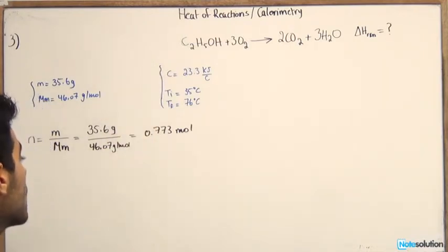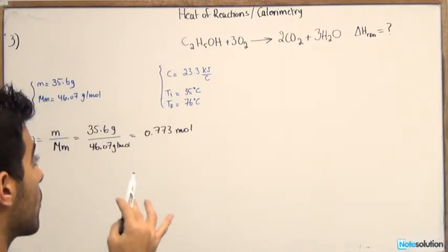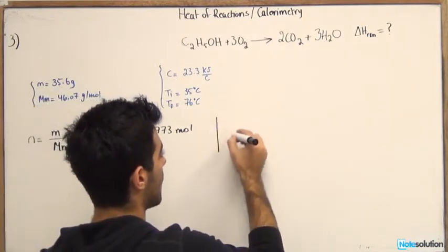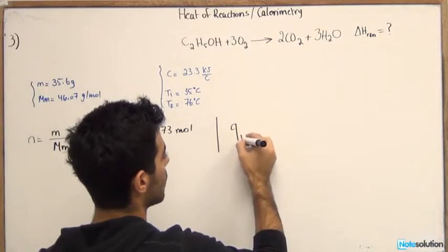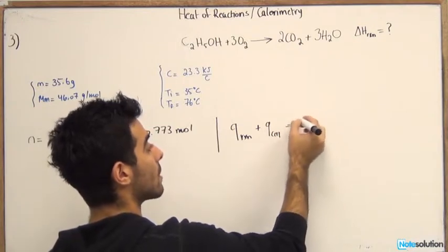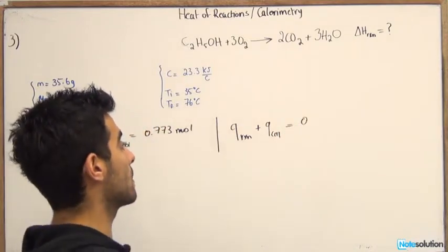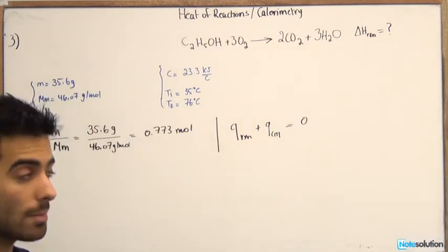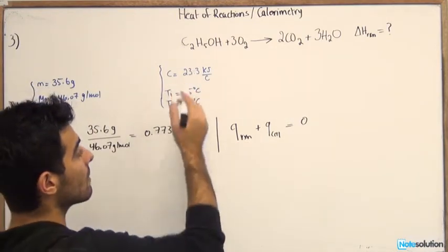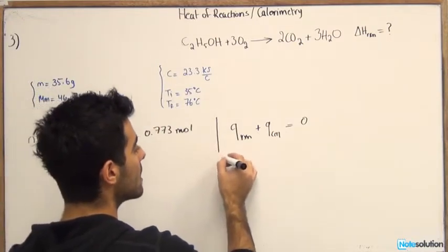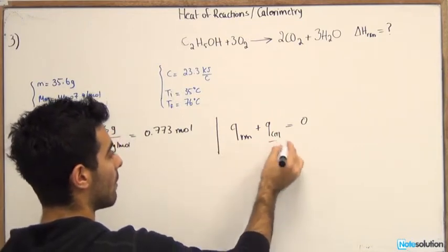Now over here, we need to figure out what is the quantity of heat for the calorimeter. Remember the law of conservation of energy states that Q reaction plus Q calorimeter is equal to zero. So in order to find the Q reaction, we need to actually find the Q calorimeter. Now in this case, we're given the heat capacity and the difference in temperature. So we can easily calculate the Q for calorimeter.